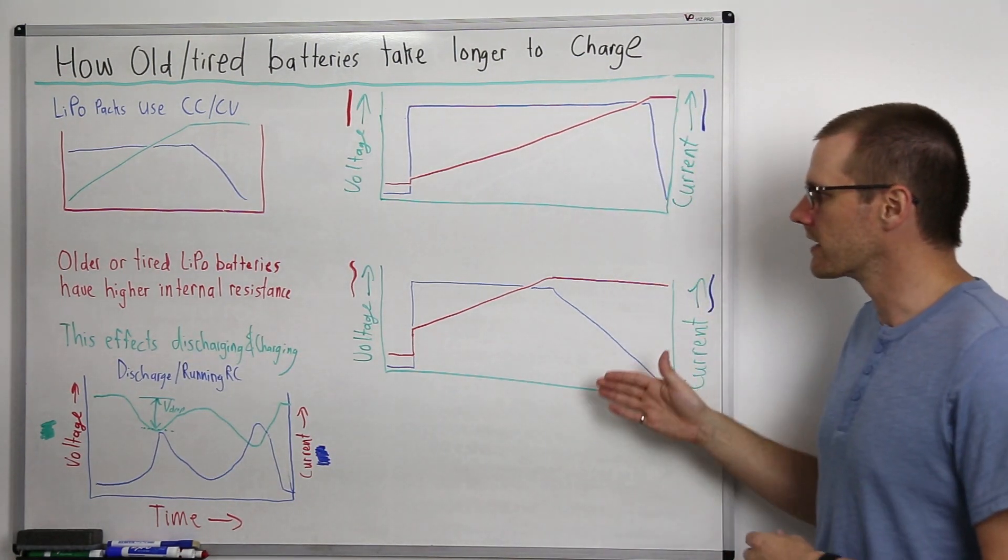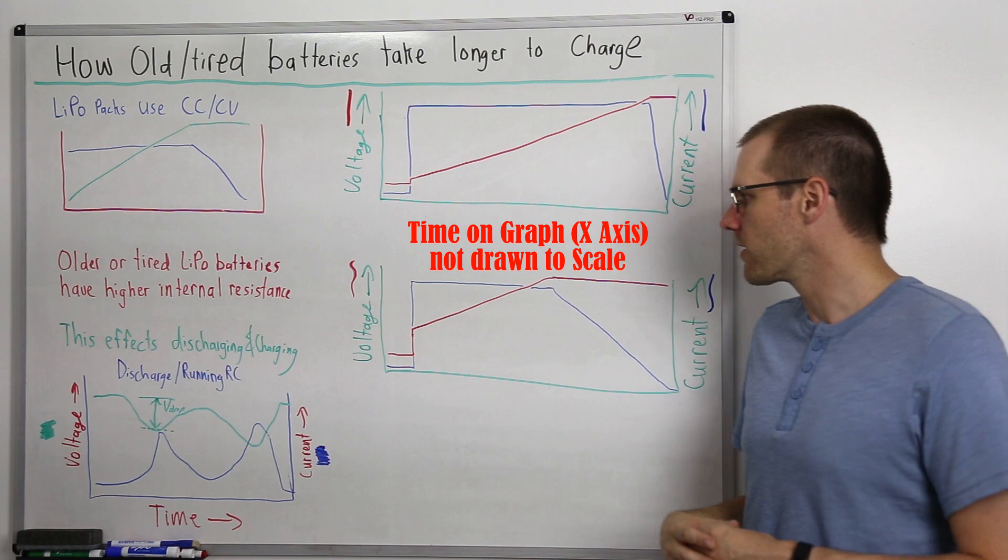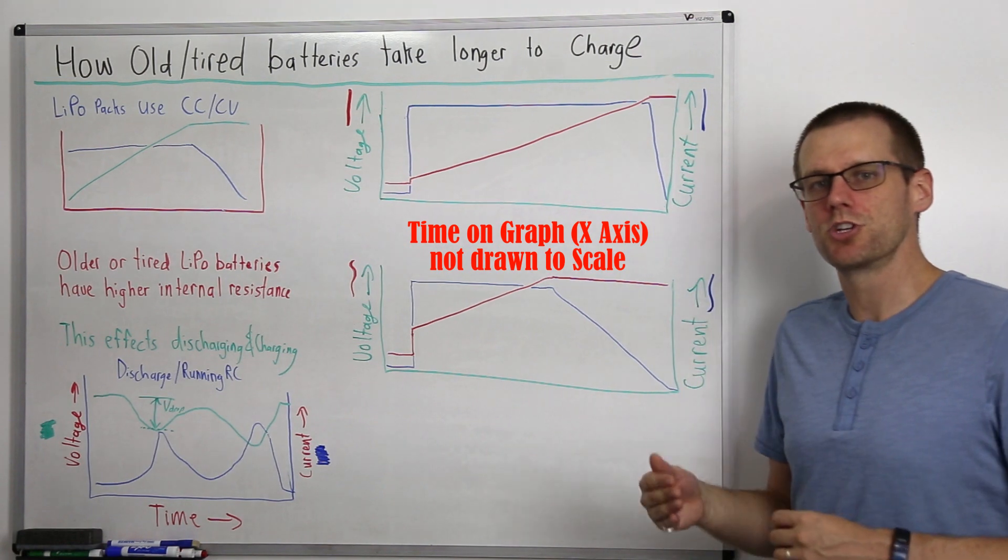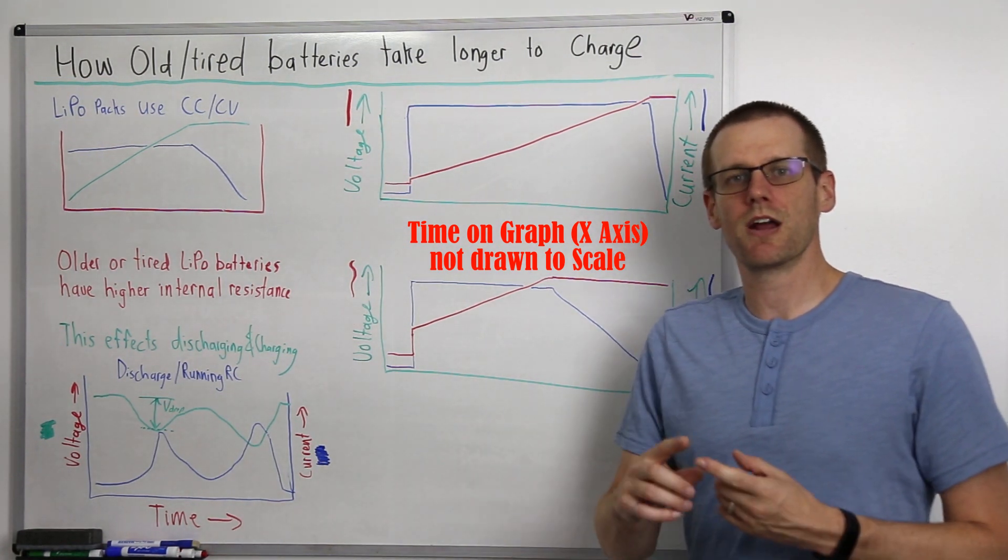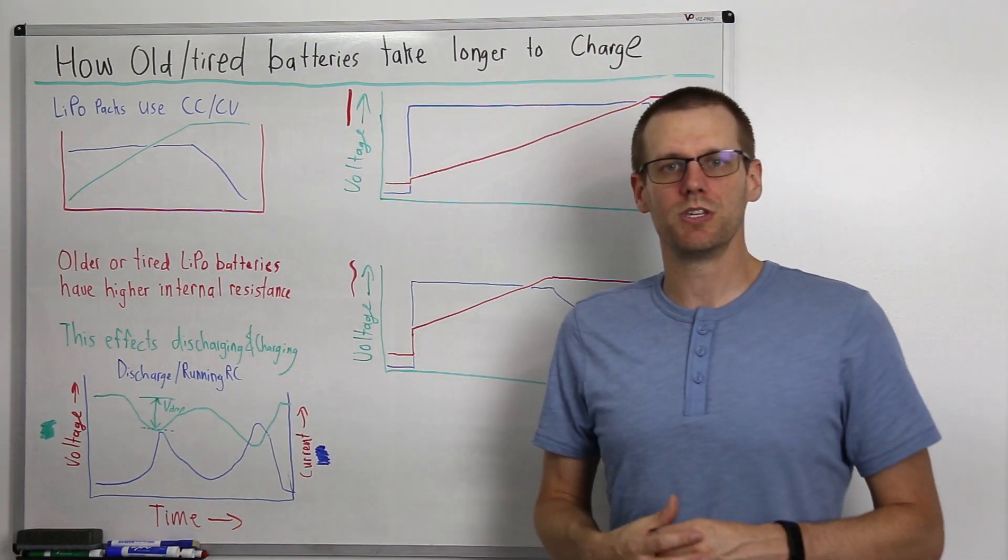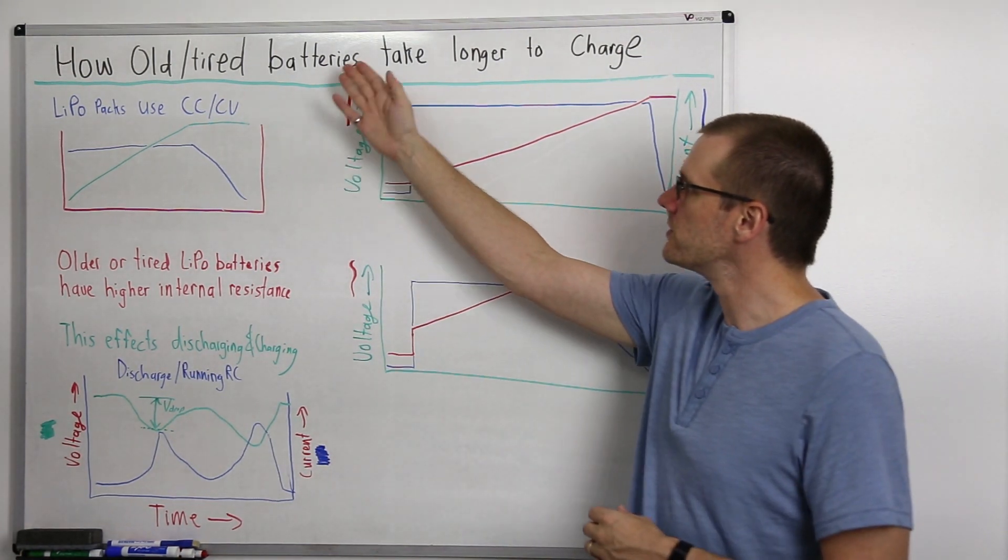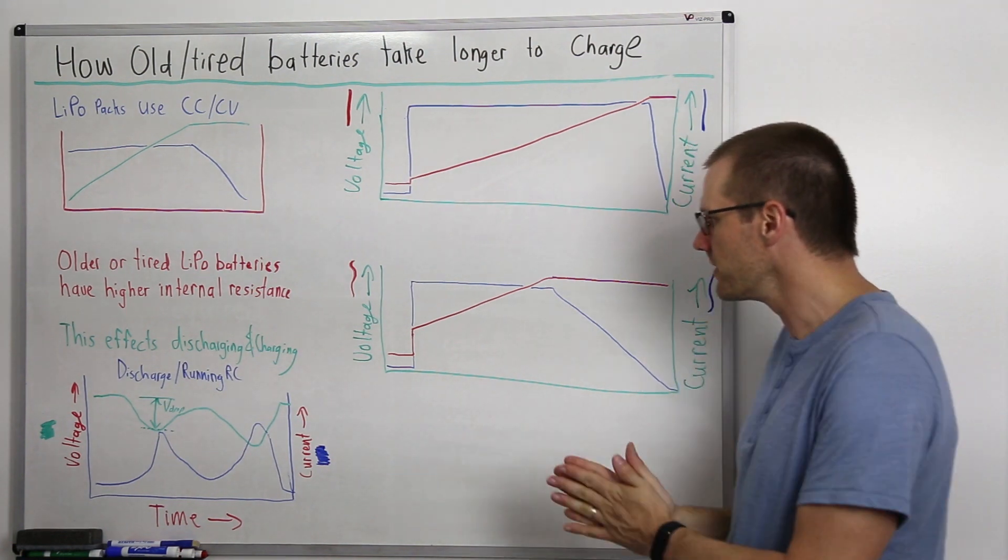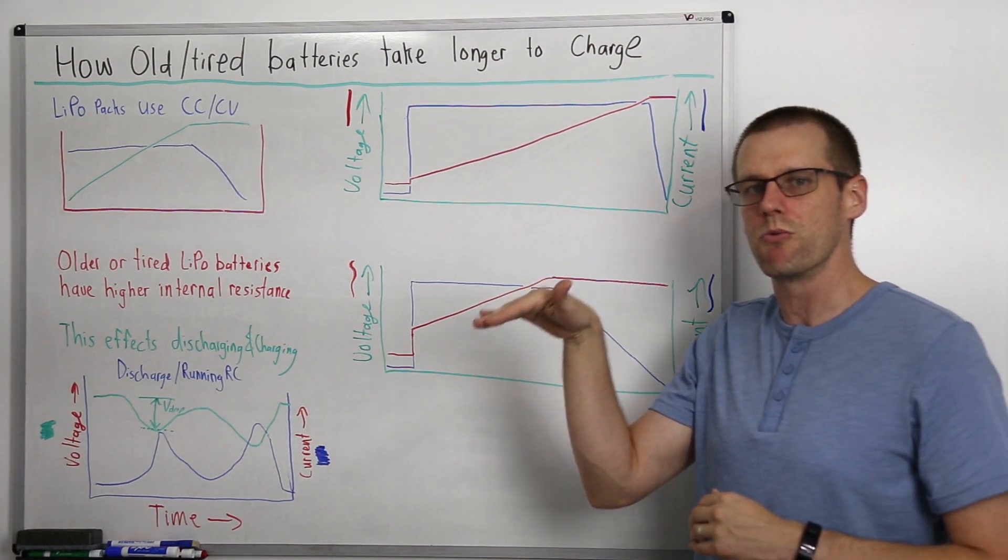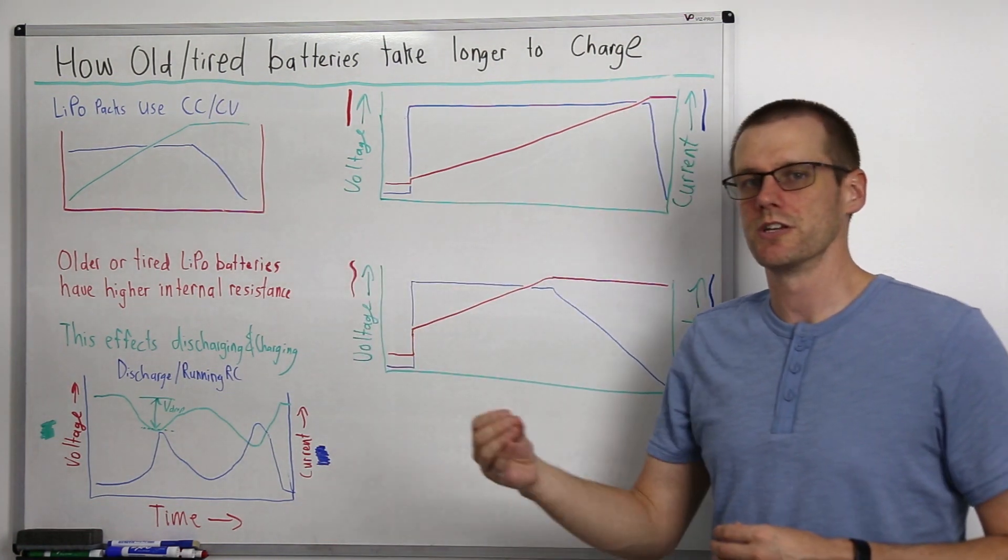This ultimately depends on the condition of your battery when it is old or tired. A more tired battery pack will experience an even longer time to charge up. It also depends on the typical charging rates you would have. If you're charging at 1C, you may not see as big of an impact as if you were charging at 2C or higher. That's how old tired batteries take longer to charge - they hit that maximum voltage and we have to wait longer during that ramping down cycle in the constant voltage phase.